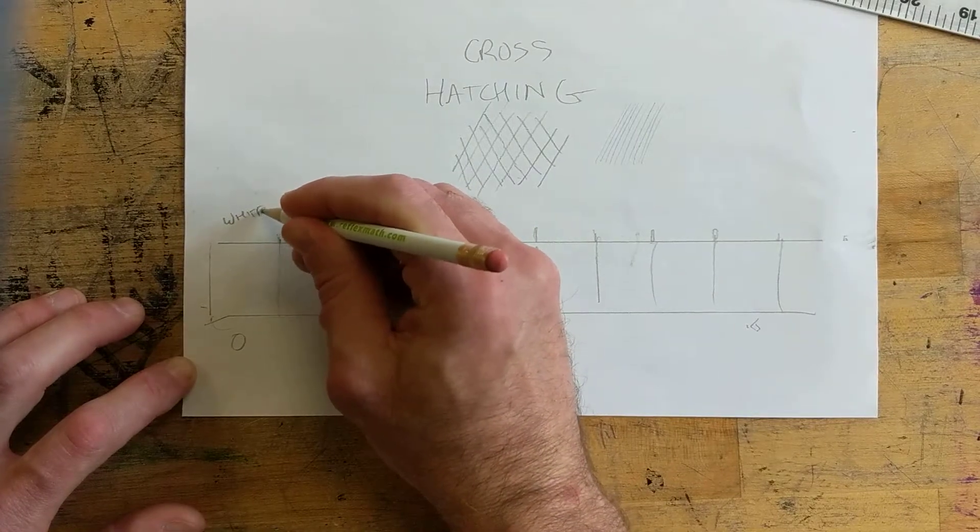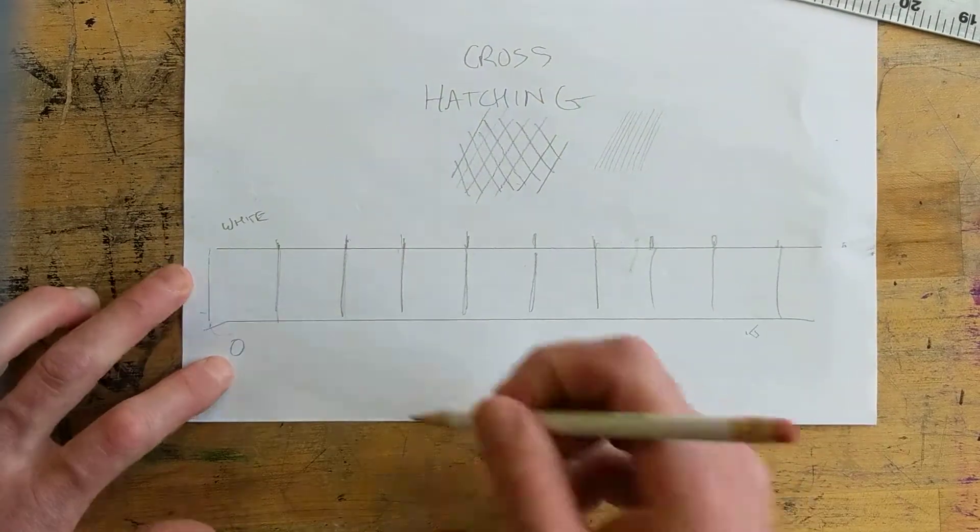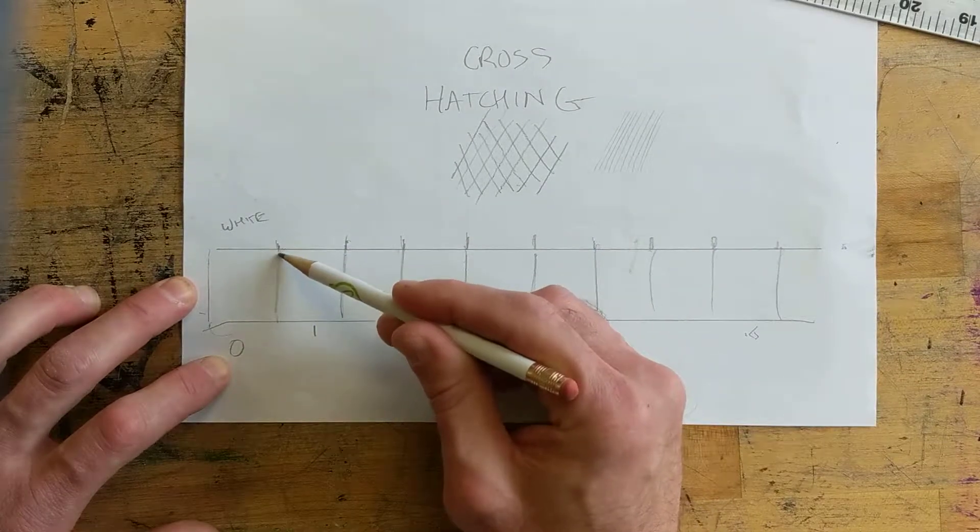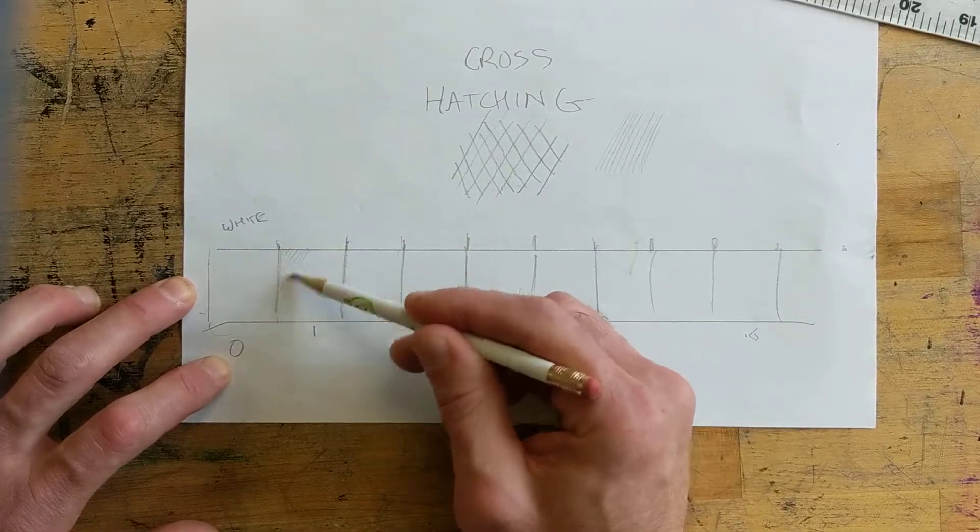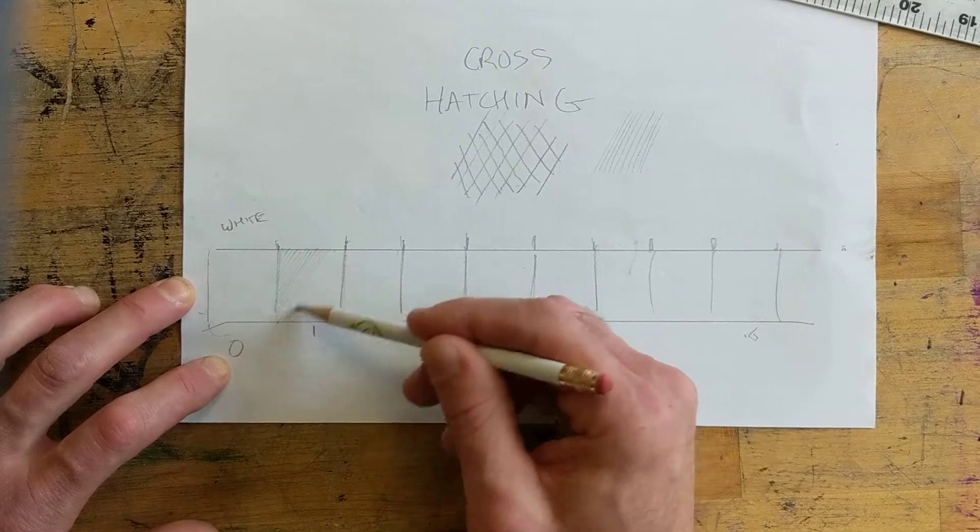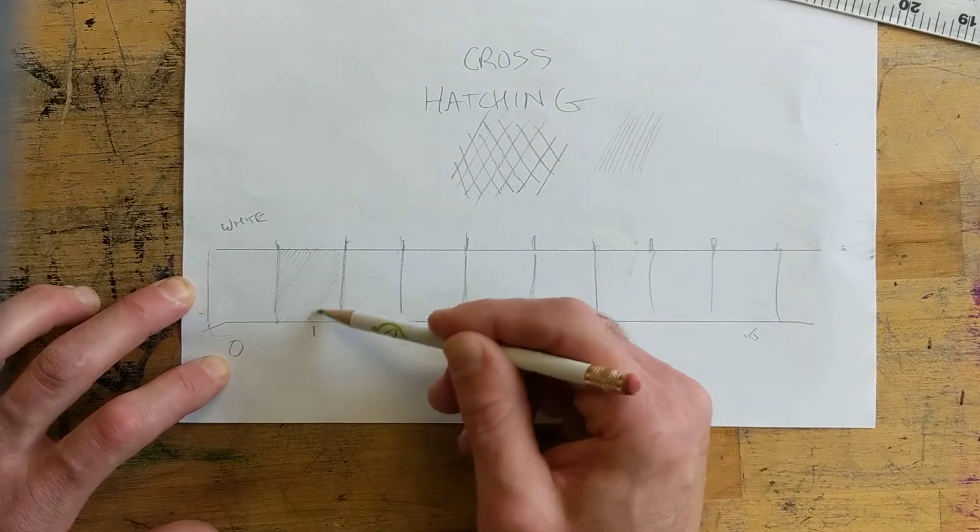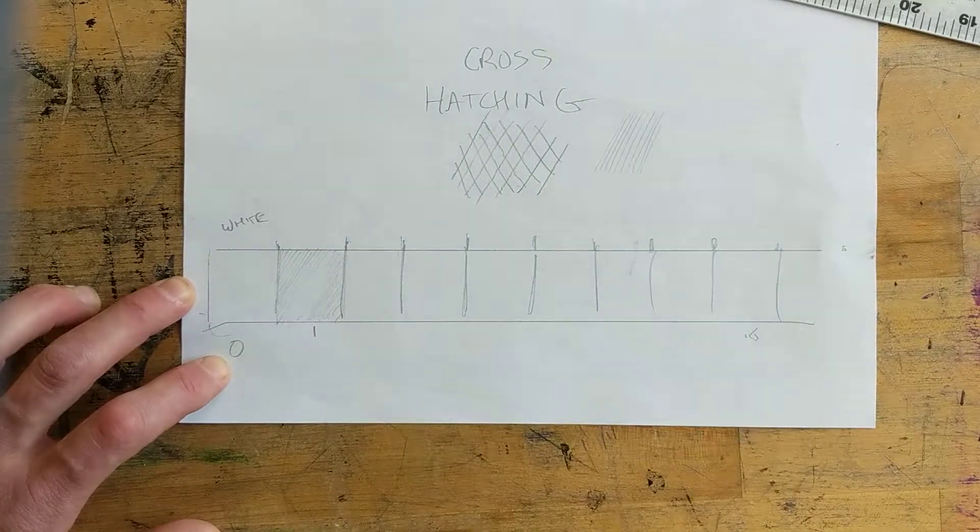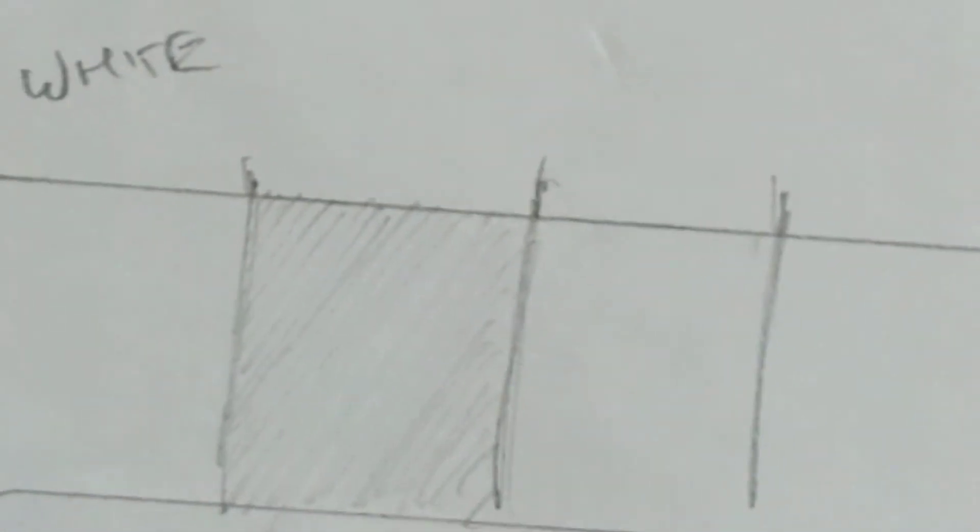White has zero lines, so it's in box zero. Light gray has one set of lines and I'm gonna do them really close together this time. Nice and light, nice and even all the way through. You can see how up close you can see those lines, but from far away they blend in.